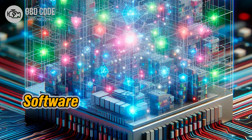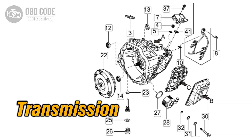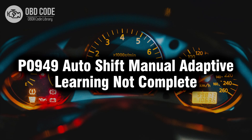4. Perform a software update or reflash on the transmission control module to address any glitches or malfunctions. 5. Check and replace any faulty sensors related to transmission operation, such as speed sensors or throttle position sensors. Thank you for watching this video, don't forget to leave a like and a comment. See you next time.